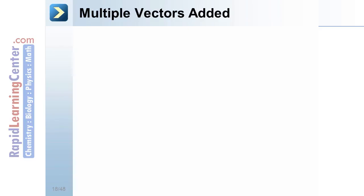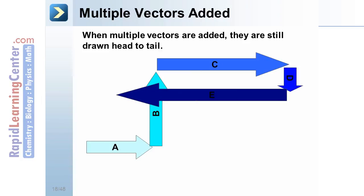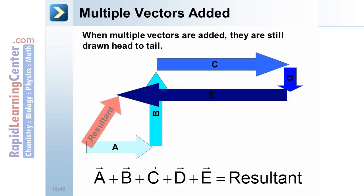Multiple vectors added. When multiple vectors are added, they're still drawn head to tail. Everything is the same. One vector, and another, and many more, can still be added together to produce your resultant. The resultant goes from the beginning of the first to the end of the last.